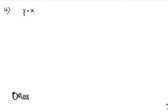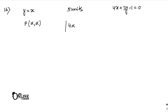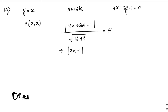Sum number 16: find the points on the line y = x which are at a distance of 5 units from the line 4x plus 3y minus 1 = 0. Let any point on y = x be P(α, α). The perpendicular distance from this point to the line equals |4α plus 3α minus 1| divided by root over (16 plus 9) = 5. So |7α minus 1| divided by 5 = 5, giving |7α minus 1| = 25.